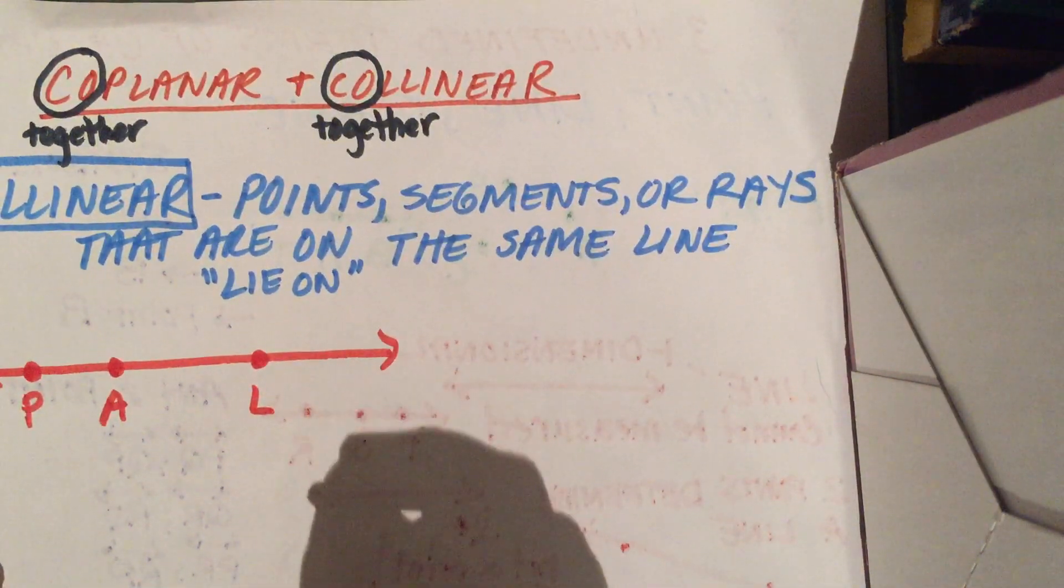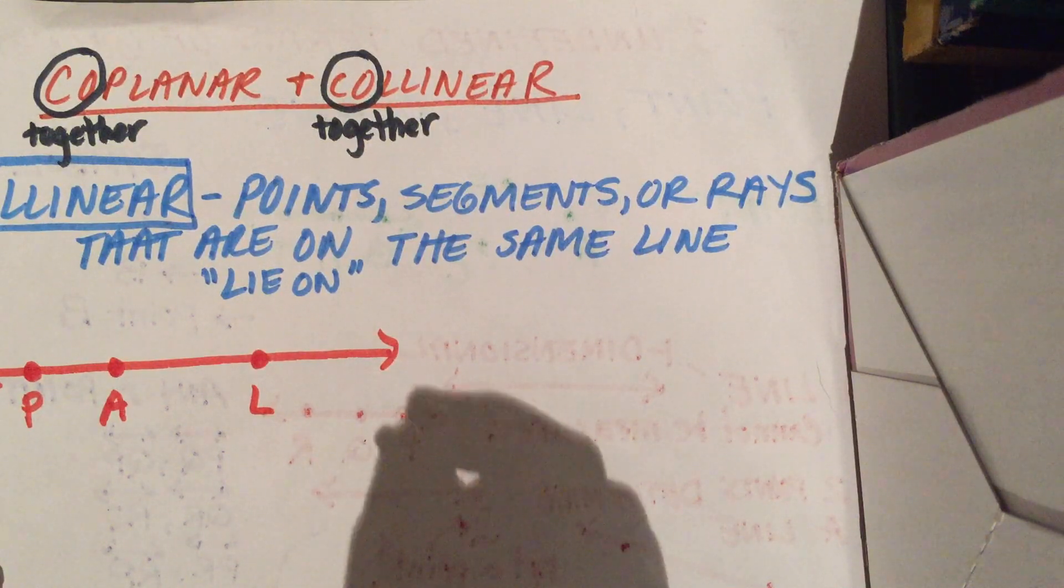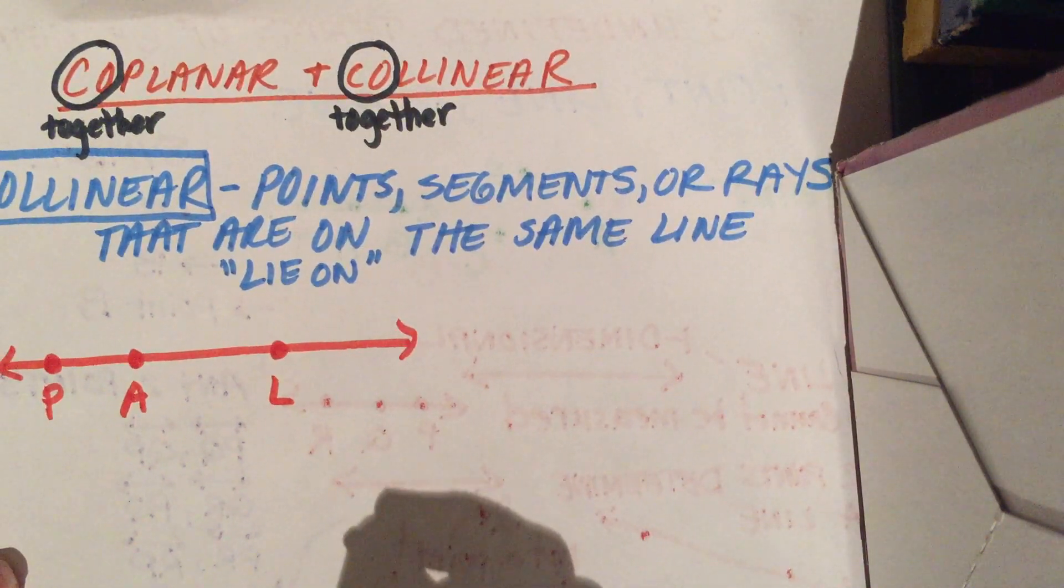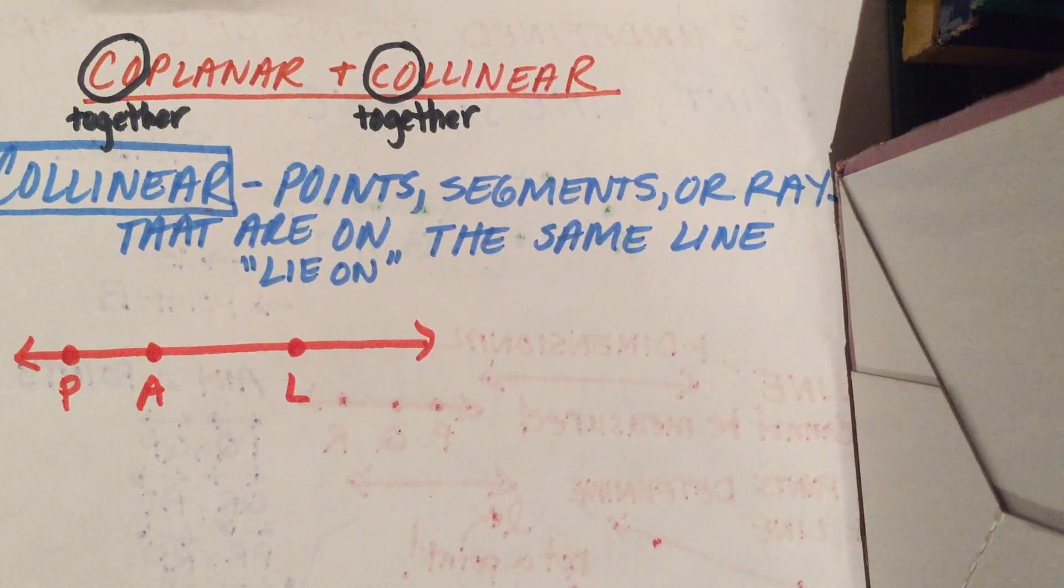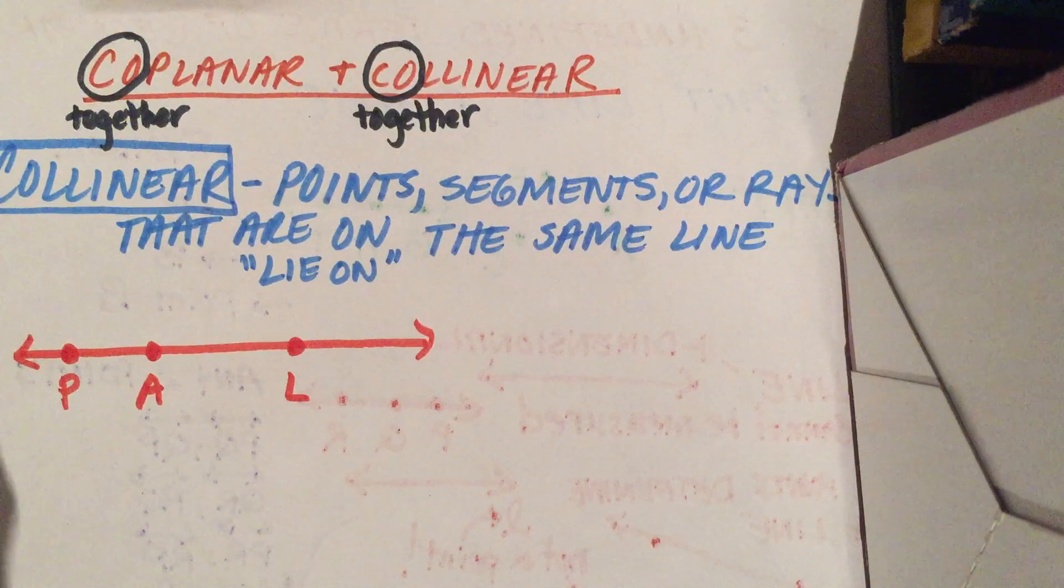Notice it's points, segments, or rays. It doesn't just have to be points. Collinear can be points, segments, or rays because those are all things that lie on lines.